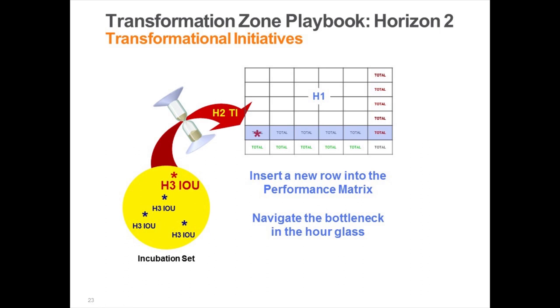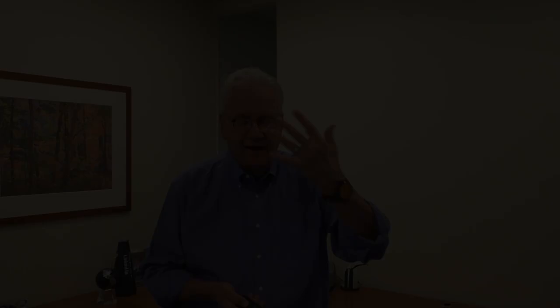The key idea behind that is you've got to navigate the bottleneck in the hourglass. The whole point is: what could you do in the transformation zone that would allow your company to break the back of the innovator's dilemma — which is essentially getting a project through the choke point of Horizon 2 in the hourglass approach of innovation maturity.